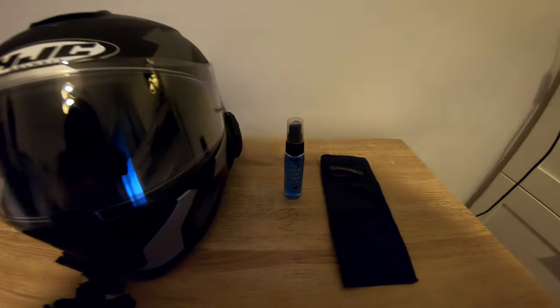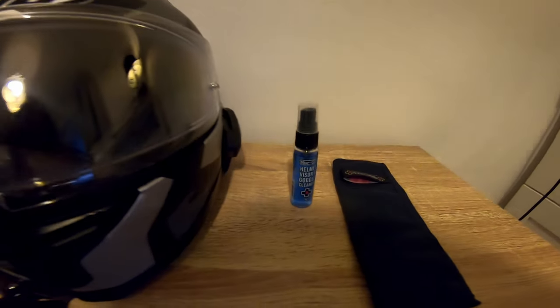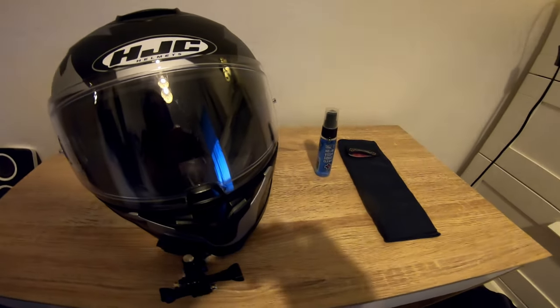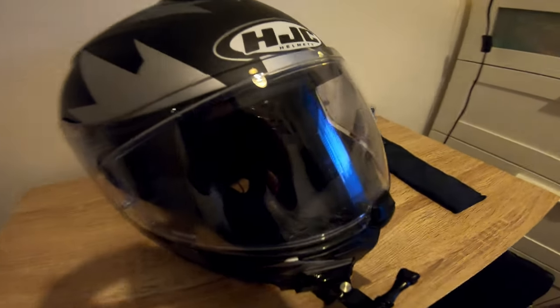Here's how to clean the visor on your motorbike's helmet. I like to use this visor cleaning kit that I got from Makoff, but you can also just use warm mild soapy water and a microfiber cloth. The cleaning kit does come with a cloth, so I find that quite handy.